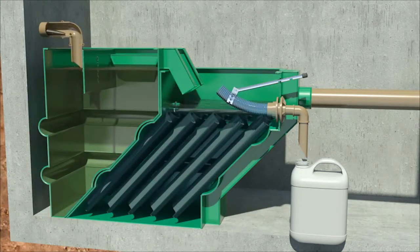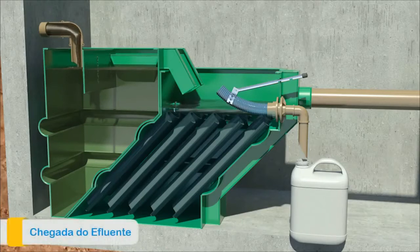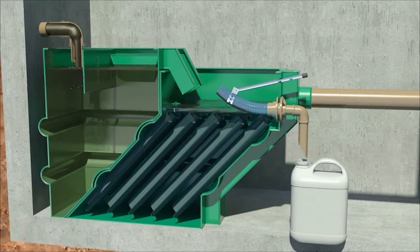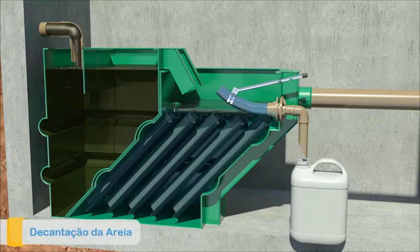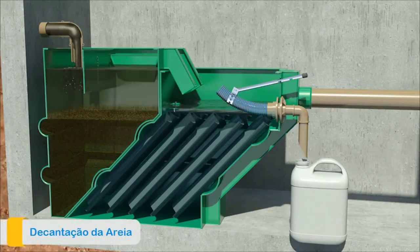The first step is to slow down the flow of the effluent through a baffle located at the top of the first module. Then the sand and other heavy solids settle. Light solids, such as foliage, are also attached to the baffle, releasing the passage only of water with oil to the second module.